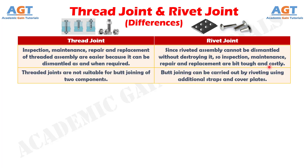And difference number seven: threaded joints are not suitable for butt joining of two components, whereas butt joining can be carried out by riveting using additional straps and cover plates.